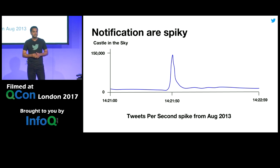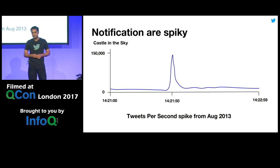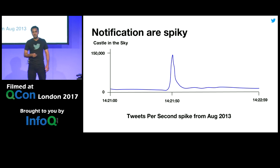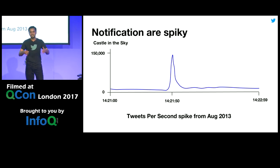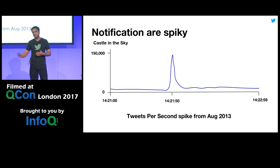Twitter is a very spiky product. For example, in 2013 in Japan, they were rebroadcasting an anime called Castle in the Sky. Something happened during the broadcast where suddenly all Japanese users took to Twitter and started tweeting, creating a tweets-per-second record for us back then. We started receiving hundreds of thousands of notifications per second. As you can imagine, every time there's a tweet spike, there's a corresponding notification spike.